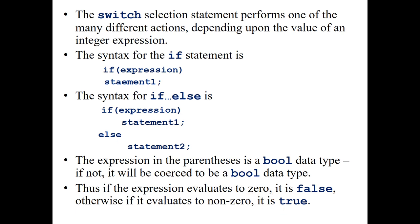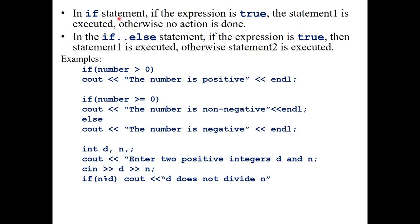In the if statement, if the expression is true, statement one is executed; otherwise no action is performed. In the if-else statement, if the expression is true, statement one is executed; otherwise statement two is executed. For example: if number > 0, then cout 'the number is positive'. If the number is 5, it is greater than zero, so the program will write 'the number is positive'. If the number is -5, this line will be skipped and control moves to the next line. Another example: if number >= 0, cout 'the number is non-negative'; else cout 'the number is negative'. This covers all possibilities — zero, positive, and negative.